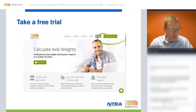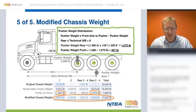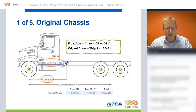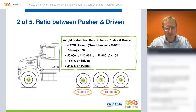We can spend a few more minutes on that if there are questions. Just to run through the five steps again: step one is to take notes about the original chassis — we need to redistribute the original chassis when the technical wheelbase changes as a result of adding the pusher axle. Step two, we determine the ratio or split between the pusher and the driven axles.